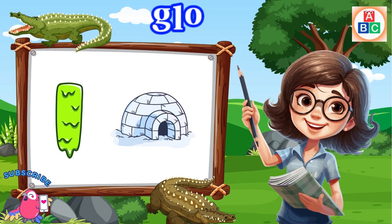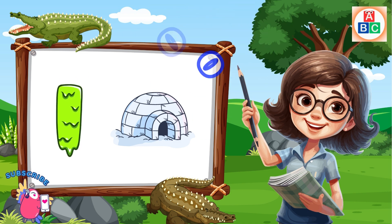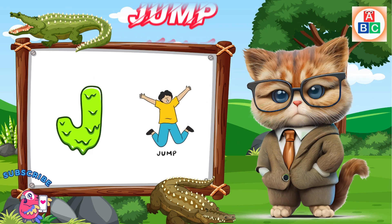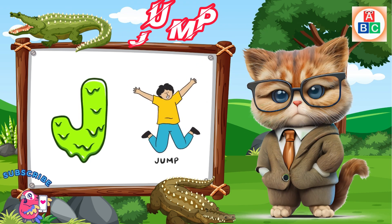I is for igloo, i-i-igloo. J is for jump, j-j-jump.